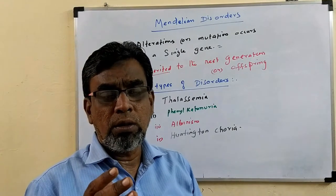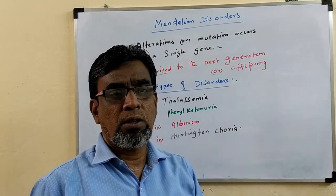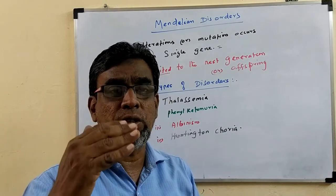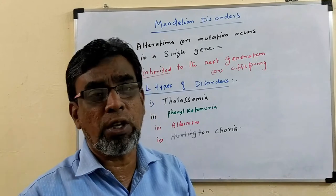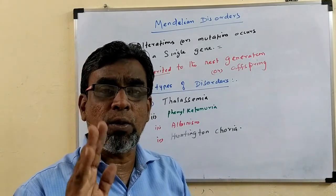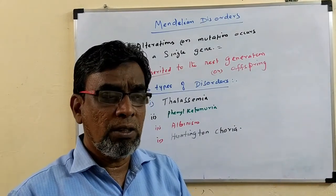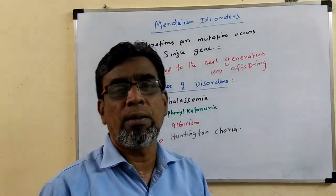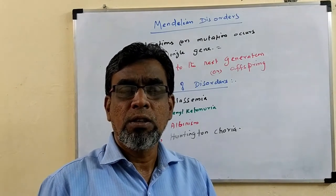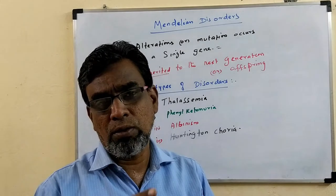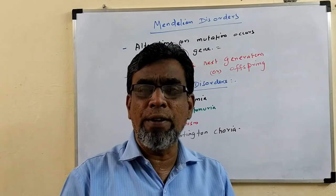We know all the characters in living things because of genes — your color, your height, your skin color, hair color, or internal or external characters. All the characters seen in your body are because of genes.